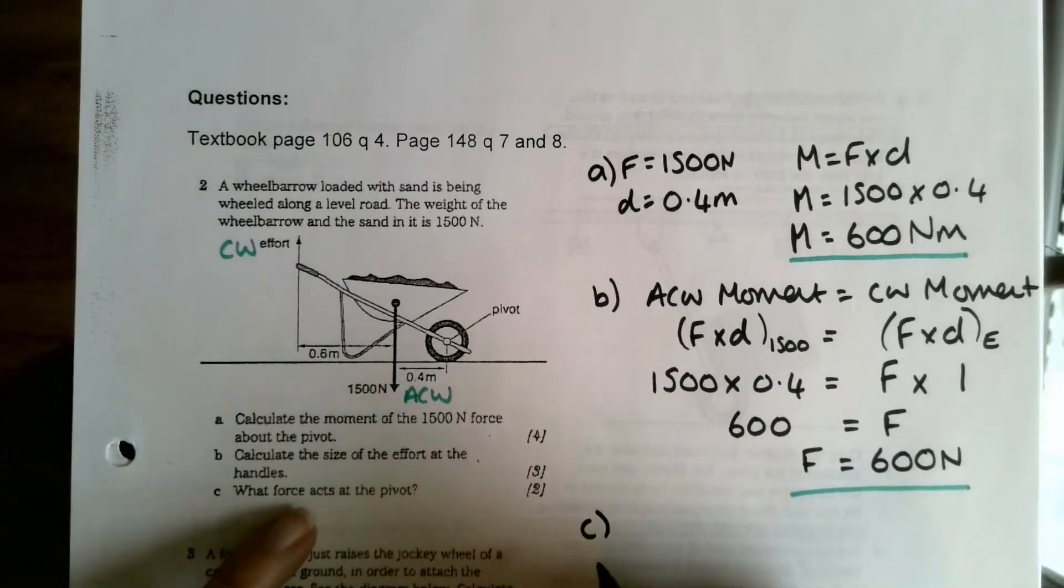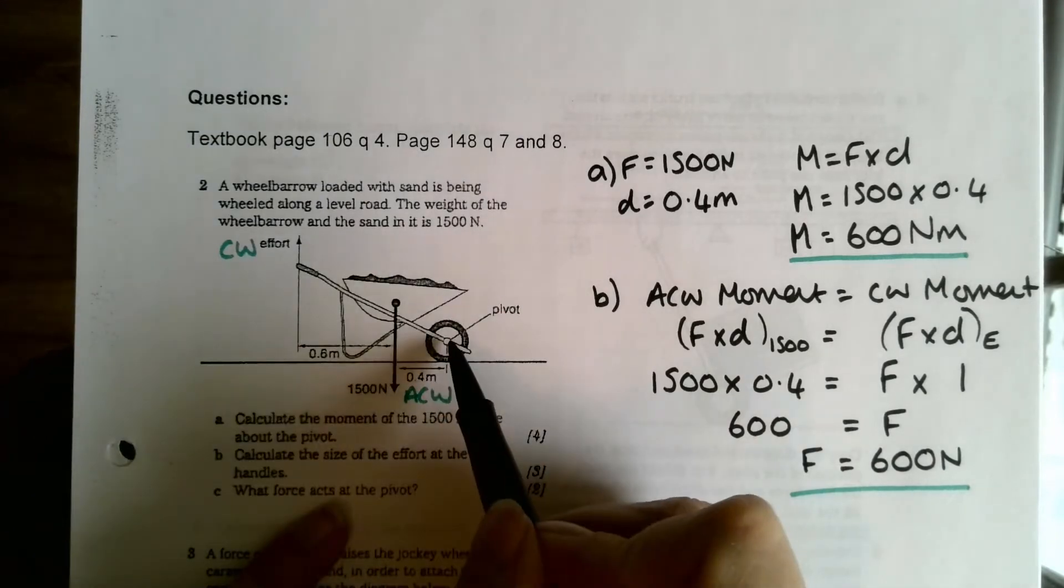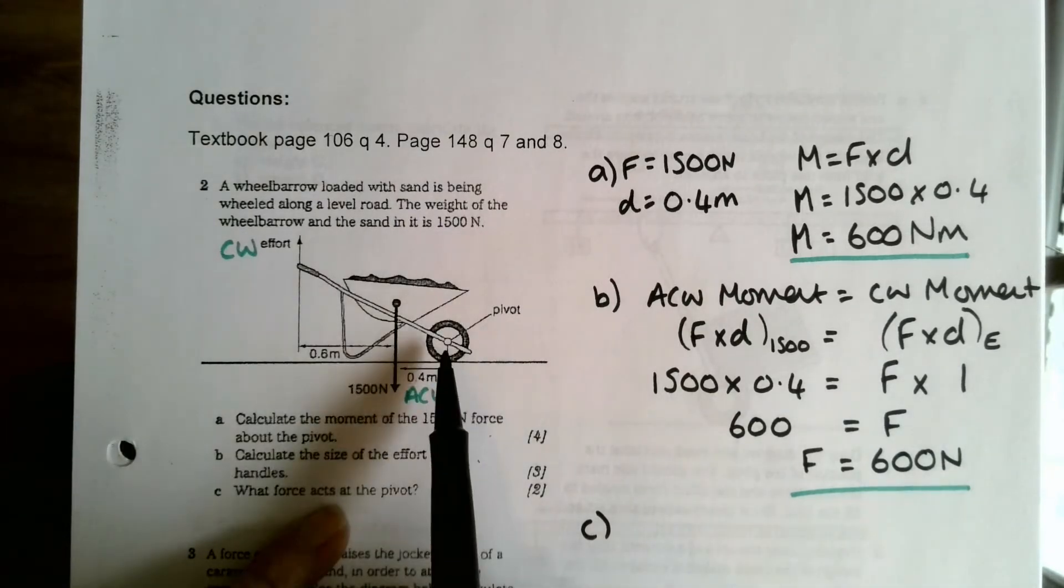Part c: what force acts at the pivot? That's just going to be that normal reaction force because this is in contact with the ground. The ground is going to be pushing up on it. Do you remember it was in that video that I uploaded yesterday, just underneath in your notes where it says the principle of moments, about the forces up, people forces down?